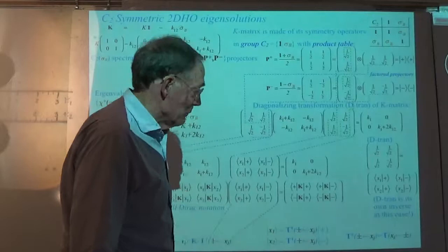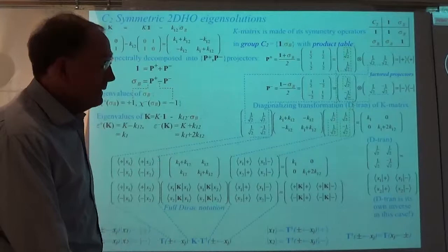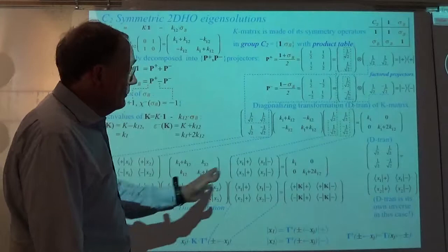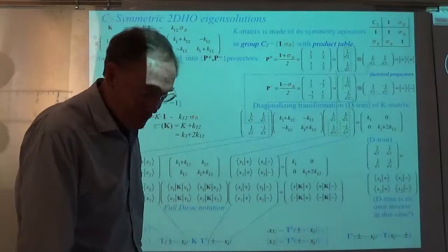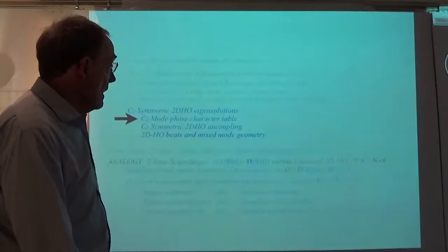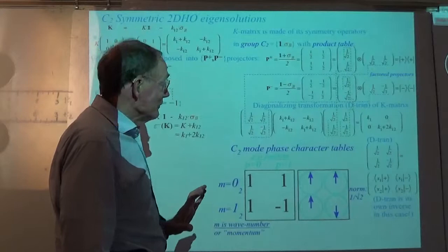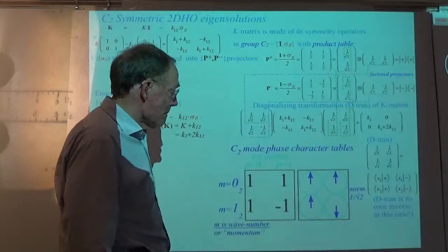The elegant stuff is all up in the corner with the operators, which lets you do this problem without looking at all the matrices. But this is the way you would tell somebody only familiar with Dirac notation how to do the problem. Now, I should mention the character table. The character table is simply a sanitized version of the DTRAN — it's just one, one, one, minus one.